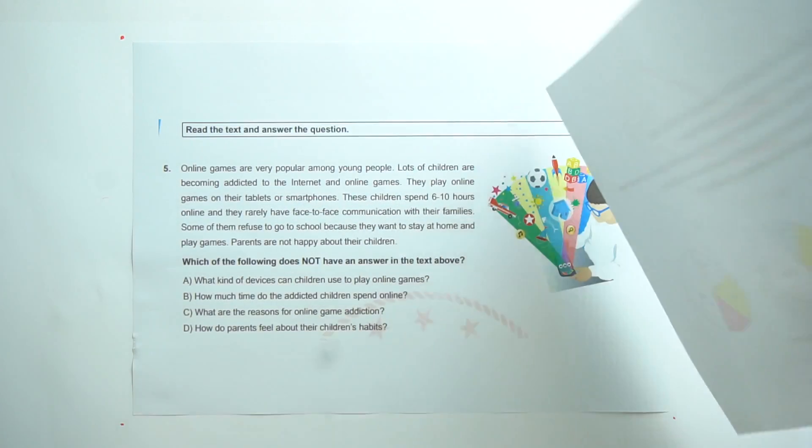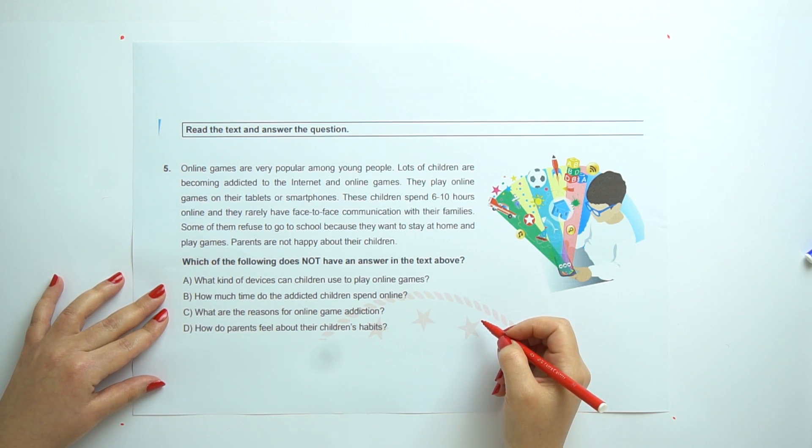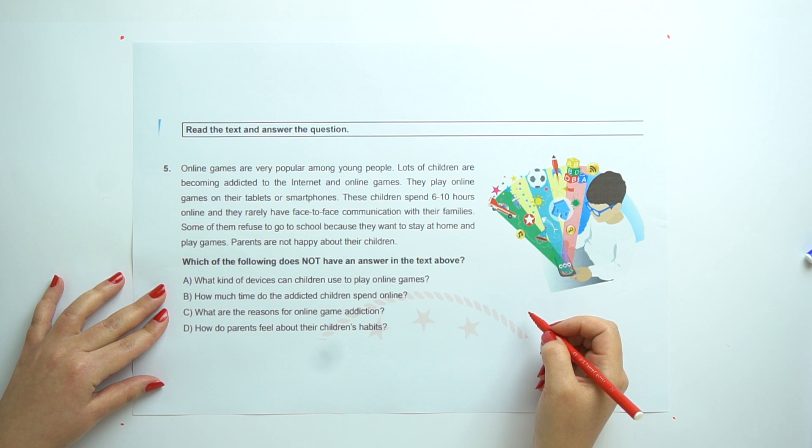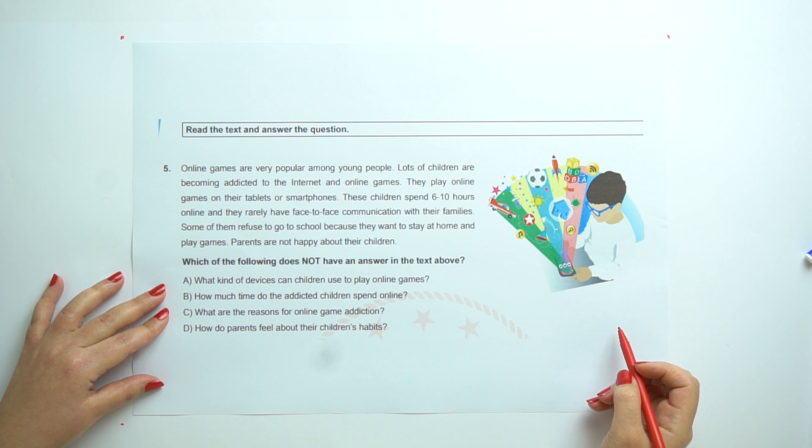And the last question. Which of the following does not have an answer in the text? Online games are very popular among young people. Lots of children are becoming addicted to the internet and online games. They play online games on their tablets or smartphones. These children spend 6 or 10 hours online and they rarely have face-to-face communication with their families. Some of them refuse to go to the school because they want to stay at home and play games. Parents are not happy about their children.